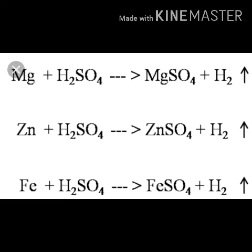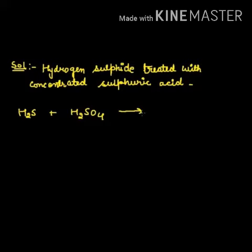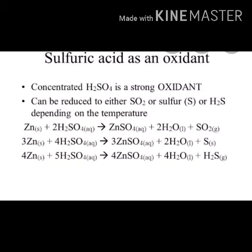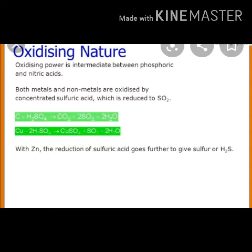If we see the action of concentrated sulphuric acid on carbon, carbon reacts with concentrated sulphuric acid to form carbon dioxide, sulphur dioxide, and water. That is: C + 2H₂SO₄ → CO₂ + 2SO₂ + 2H₂O.